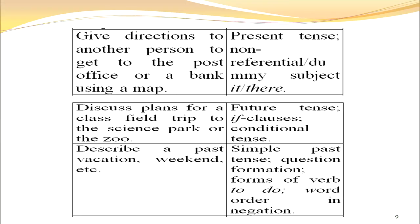Another situation: give directions to another person to get to the post office or a bank using a map. This will give you a chance to talk about present tense, non-referential or dummy subjects like 'it' and 'there' — as in 'It rains' or 'There was a man', etc. Next, discuss plans for a class field trip to the science park or to the zoo, which will give you a chance to talk about future tense, if-clauses, and conditional tense.